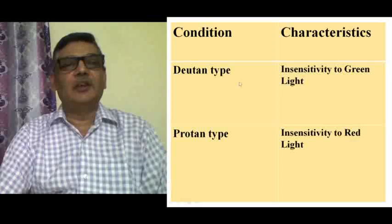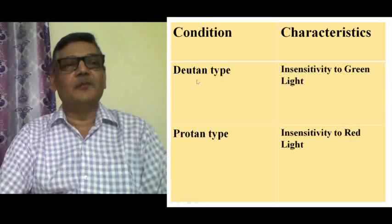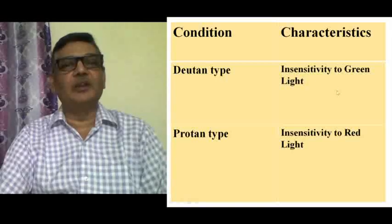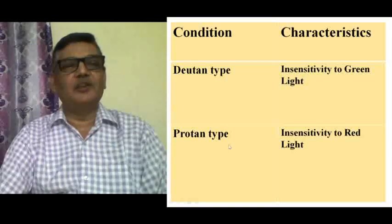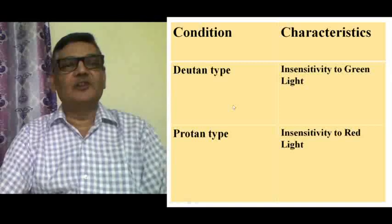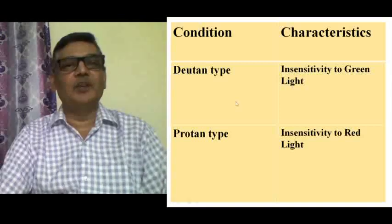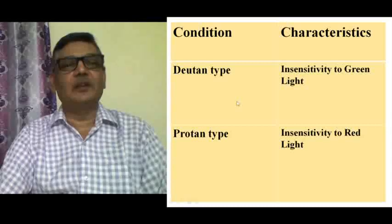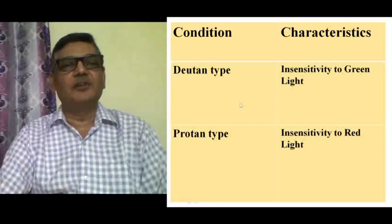Red-green color blindness is of two types. One is the deuton type, in which persons are insensitive to green light, and the other is the proton type, in which persons are insensitive to red light. It is the presence of specific cone cells in our retina that helps us identify color, so defects in cone cells lead to this kind of situation.